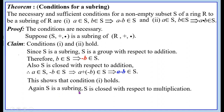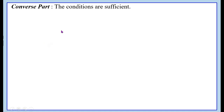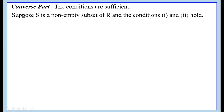Again, since S is a sub-ring, S is closed with respect to multiplication. Therefore, A belongs to S and B belongs to S implies A·B belongs to S. That is the second condition. Hence, the conditions are necessary.